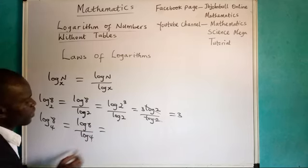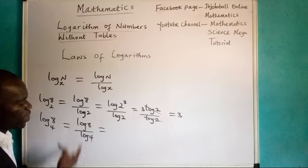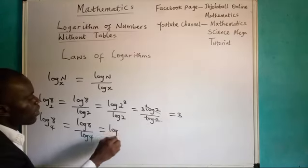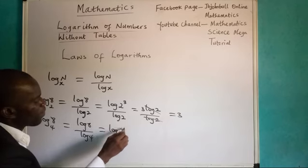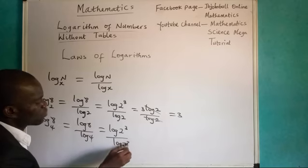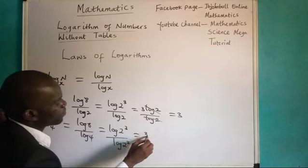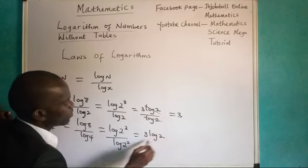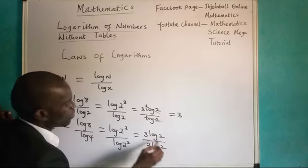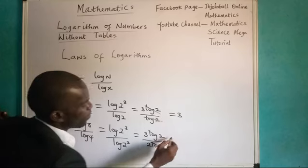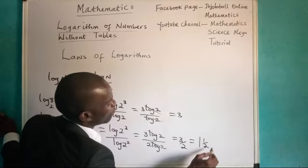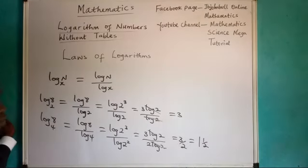I can reduce 8. If I don't want to use the calculator, I will reduce 8 and also reduce 4. Become log 2 power 3 divided by log 2 power 2. I will take the 3 out. Become 3 log 2 divided by 2 log 2. I will now cancel that. I will have 3 over 2, and 3 over 2 is the same thing as 1 and 1 over 2 as a mixed number.